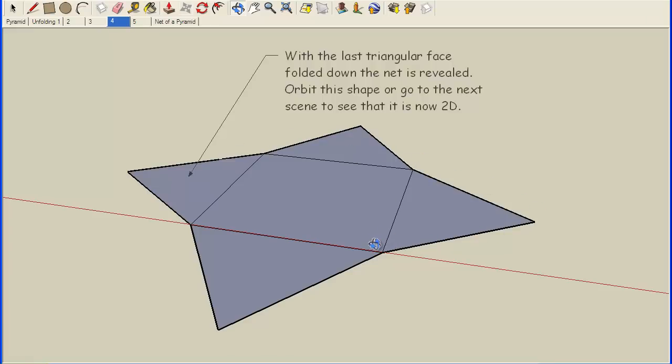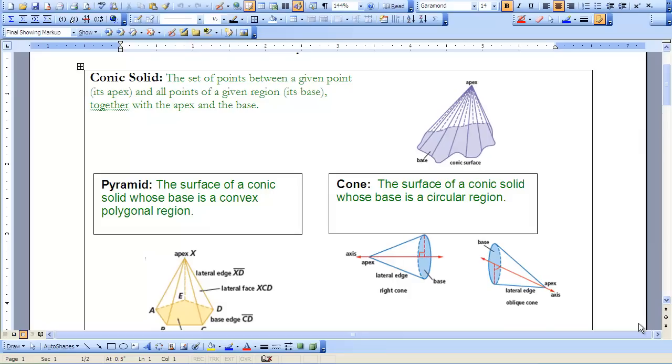The shape of my base is a square. When this came all together, my apex of my pyramid was directly over the center of my base, so it was a regular pyramid.